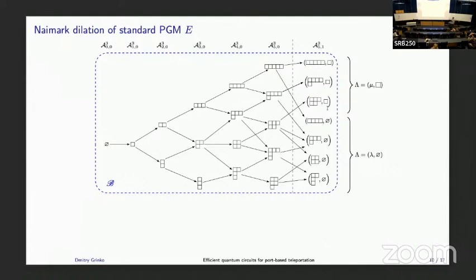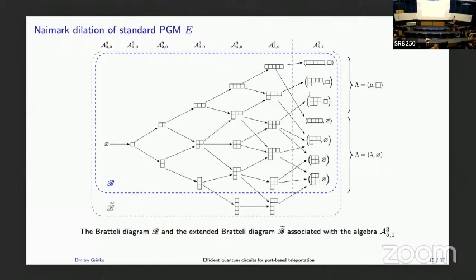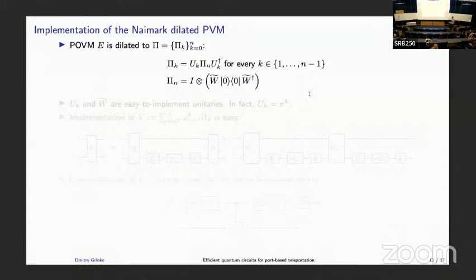This is an example of a so-called Bratteli diagram, which serves the purpose of labeling the Gelfand-Tsetlin basis. The Gelfand-Tsetlin basis is basically a set of paths in this diagram. The last vertex is an irreducible representation of the corresponding algebra — in this case, the algebra of partially transposed permutations on six qudits with one system partially transposed. The idea is to carefully add vertices following a rule in our paper, and it turns out that on this enlarged Hilbert space you can construct a projective measurement.